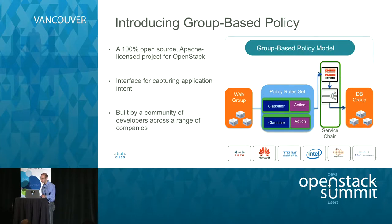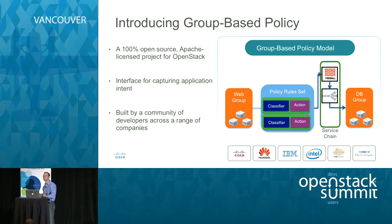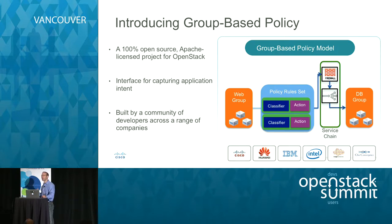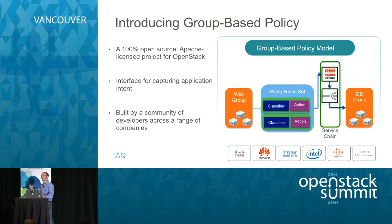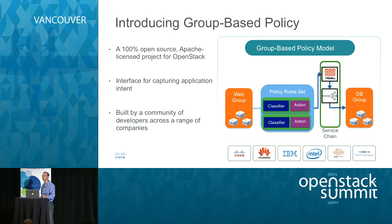One of the ways we've been driving this forward and helping OpenStack move towards this model is a project called Group-Based Policy. Group-Based Policy is 100% open source, Apache licensed, designed to work with OpenStack. It was released originally with Juno and is also available on top of Kilo. It's a project designed for capturing application intent — we started with focusing on network intent, but our broader vision is to give you tools that allow you to capture requirements across compute, storage, and networking to achieve this application modeling behavior efficiently deployed across your infrastructure.